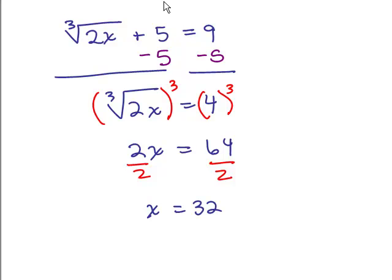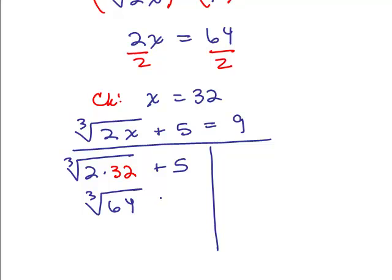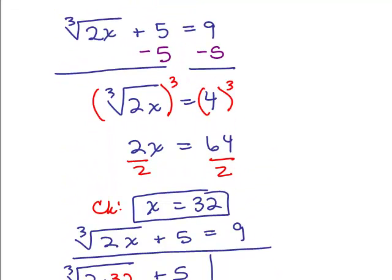Now it's important we check this in the original, so now let's go ahead and check it. The original was cube root of 2x plus 5 equals 9, and we're going to put in 32 for x on the left-hand side, so the cube root of 64 plus 5, now the cube root of 64 is 4, because 4 cubed is 64, so we have 4 plus 5 is 9, we have 9 on the other side, so yes, this checks, so the solution here is indeed 32, so it's easy compared to the ones we've been doing.